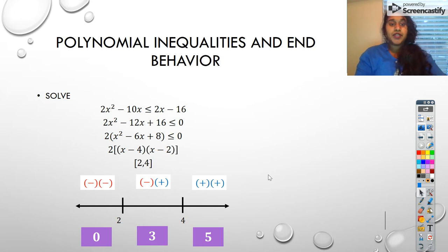And I got negative, negative, negative, positive, positive, positive. So that tells me that if I was doing a solution set for this, if I was looking for it, it would be 2 to 4.